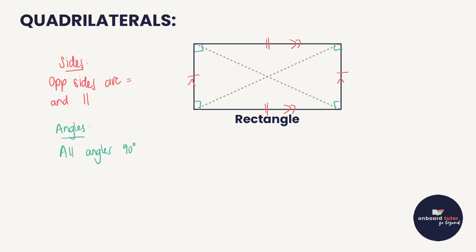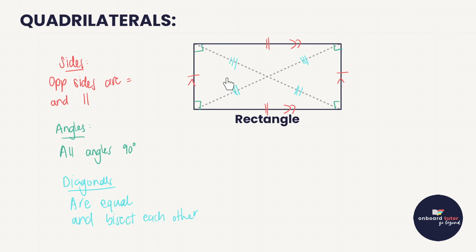What do we know about the diagonals? The diagonals once again bisect each other, but because of these 90-degree angles it means all of them are going to be equal. So the diagonals are equal and they bisect each other. Because this whole line is equal to this whole line and they cut each other in half, this piece here equals this piece here equals this piece here equals this piece here. When building on questions like this, it's great to spot an isosceles triangle and deal with angles opposite equal sides.